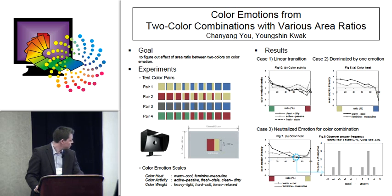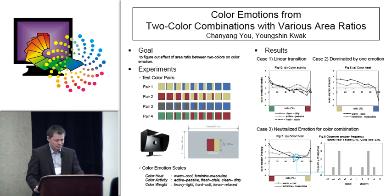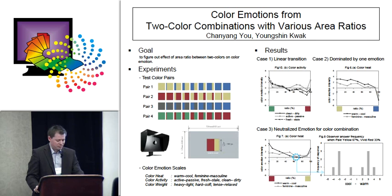As a result, there are three patterns. One shows linear transition according to area ratio, and another shows that total color emotion is dominated by one color emotion.